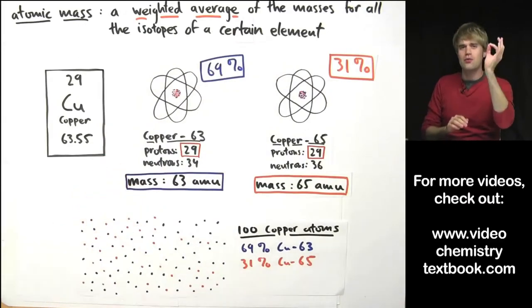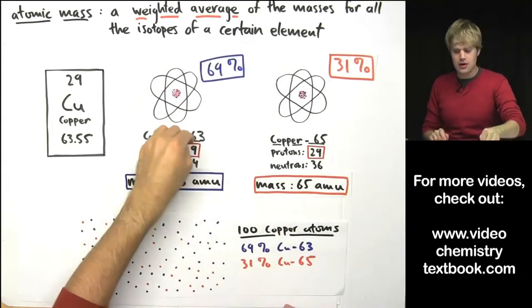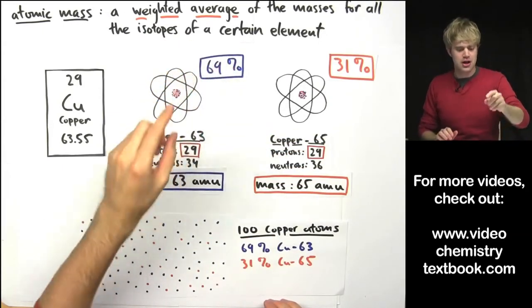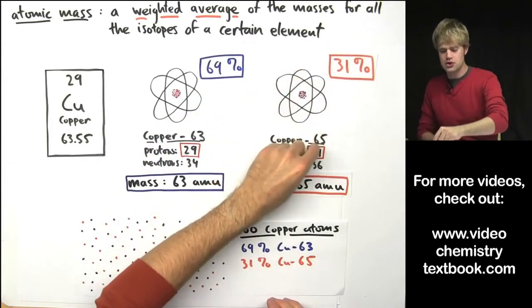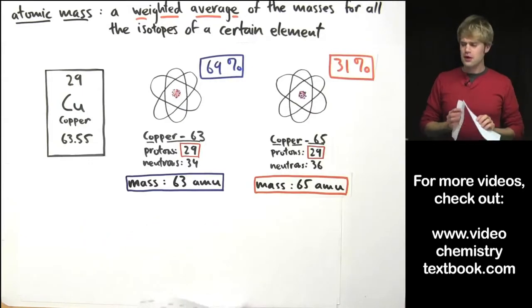you pull a copper atom at random from somewhere in the world and it can be either 63 or it can be 65. You have a 69% chance of getting copper-63 and a 31% chance of getting copper-65.